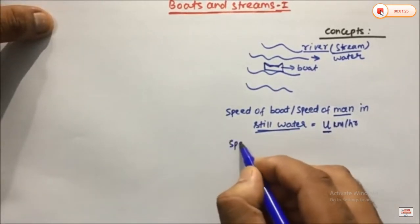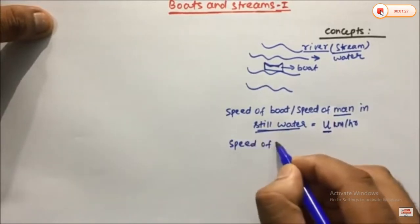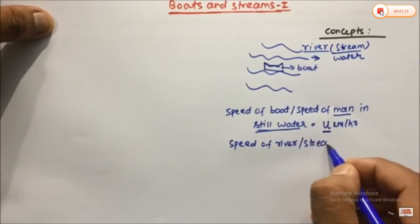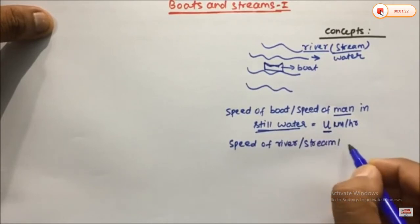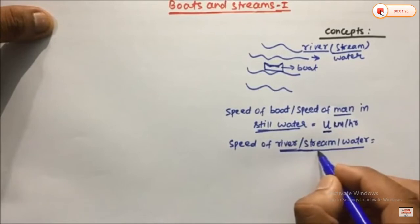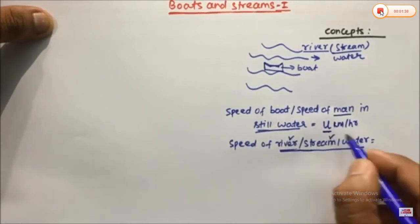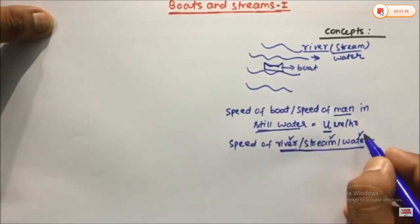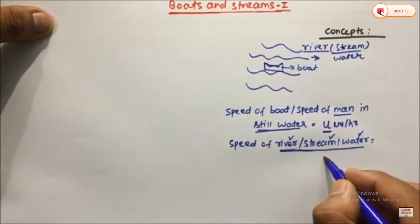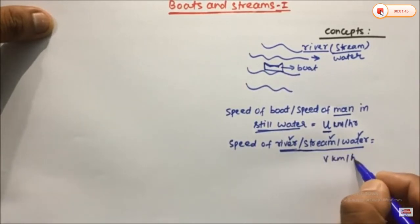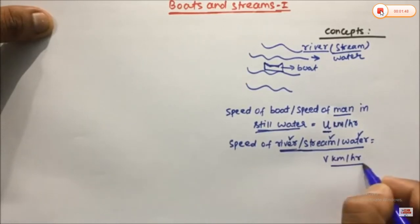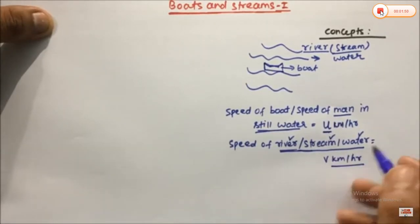The next term is speed of river, speed of stream, or speed of water. In questions, all three terms mean exactly the same thing. This speed is denoted as V kilometers per hour.